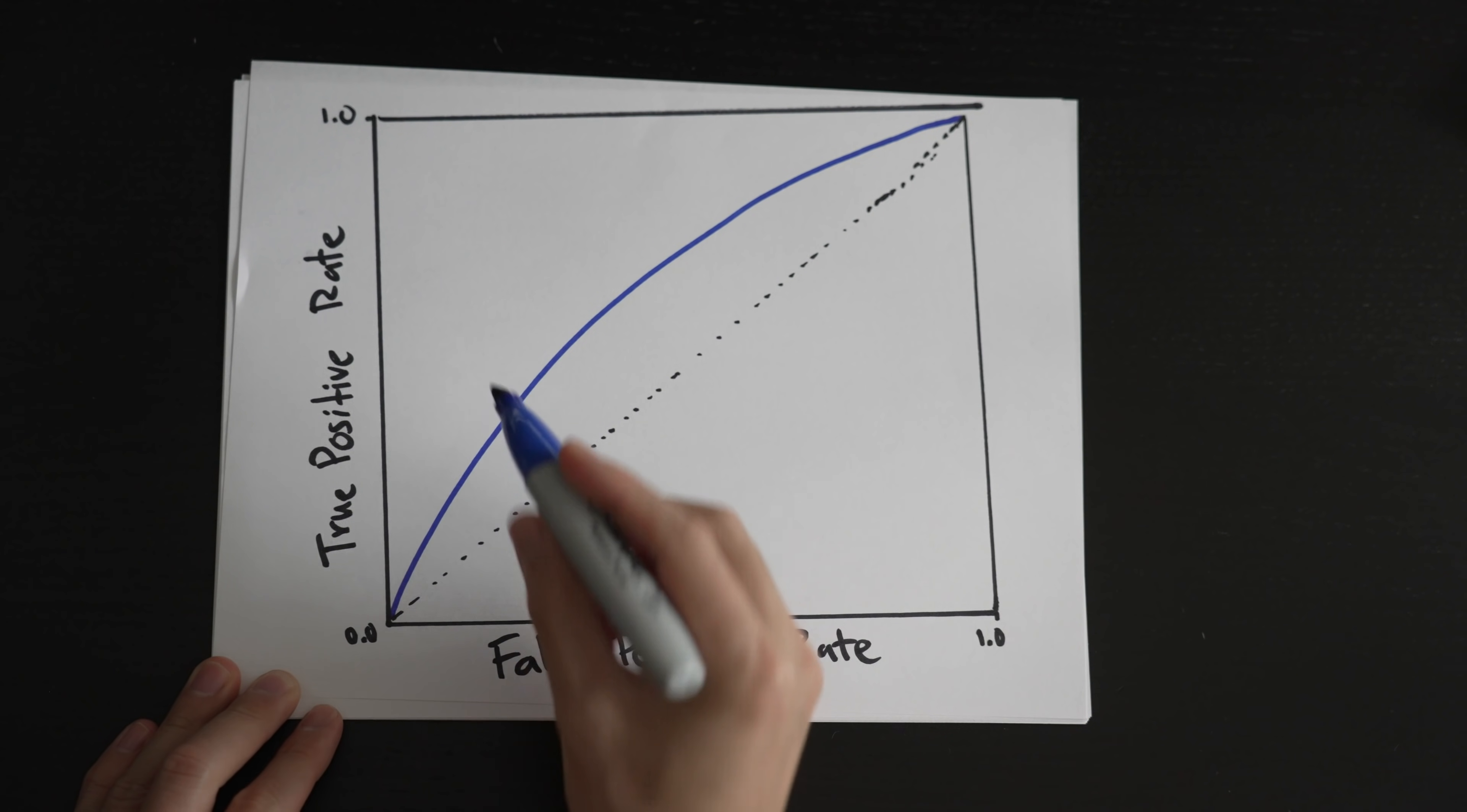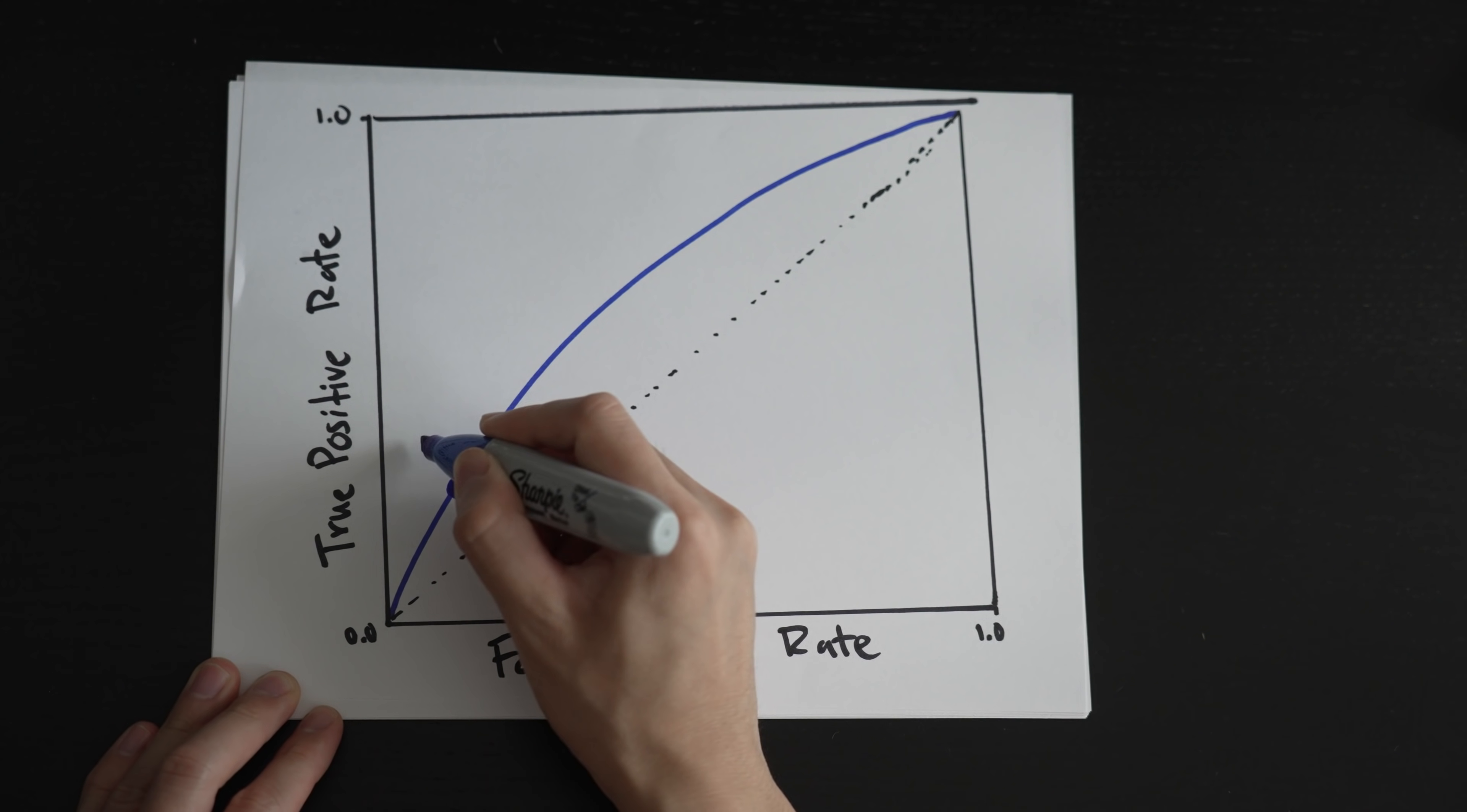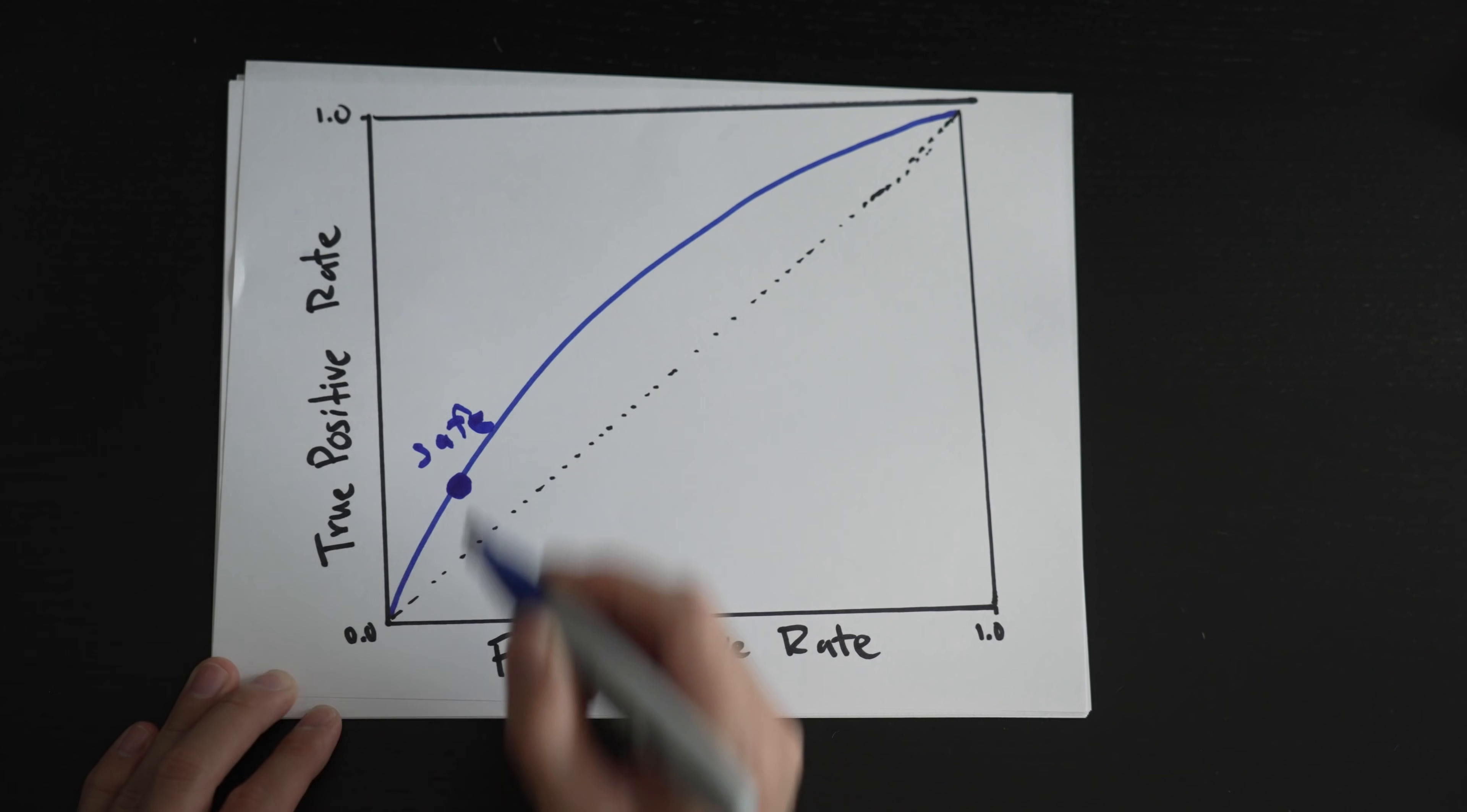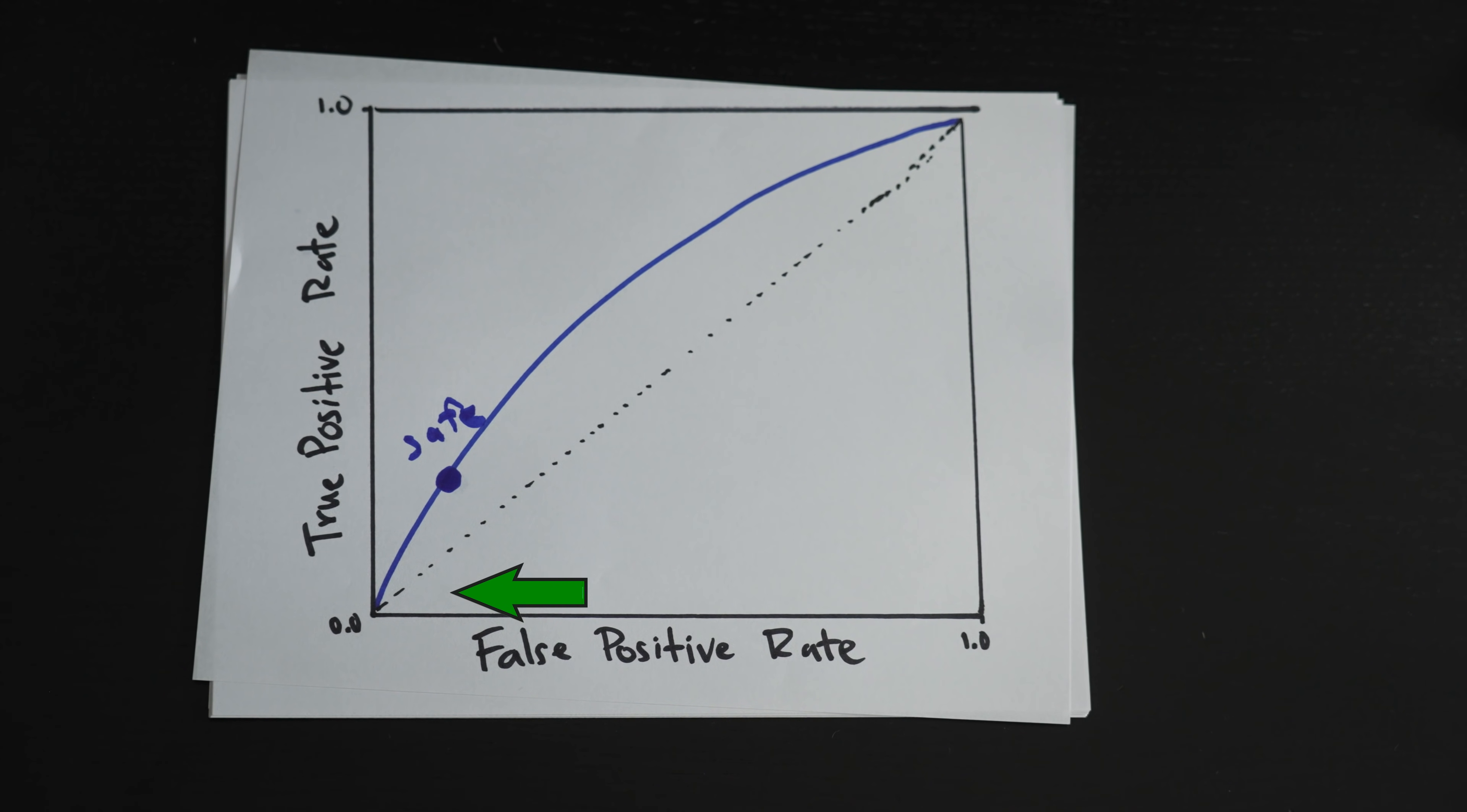So that strategy would be this dot on this curve. He's optimizing for lowering the false positive rate at the expense of our true positive rate. We want to have high precision, basically.